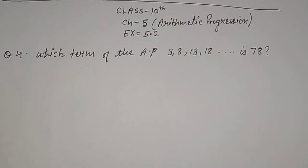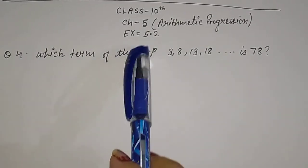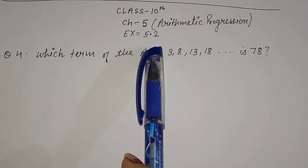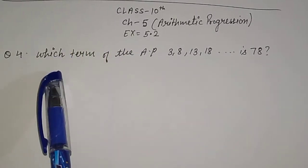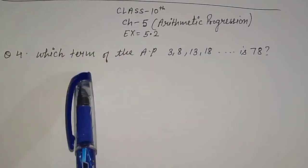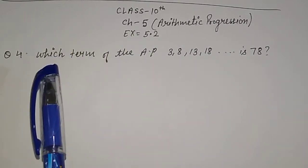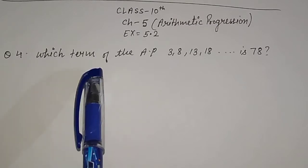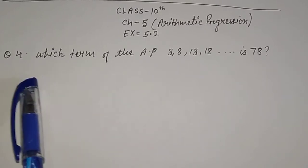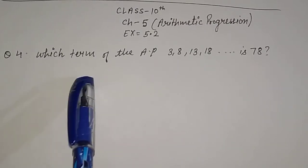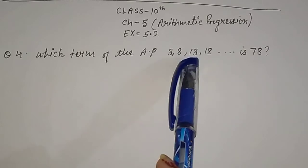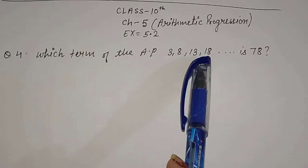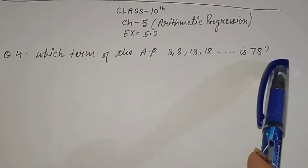Good morning students. Today we are going to discuss Exercise 5.2 Question number 4. We have already discussed question numbers 3, 2, and 1. Now question number 4 is: which term of the AP 3, 8, 13, 18 is 78?